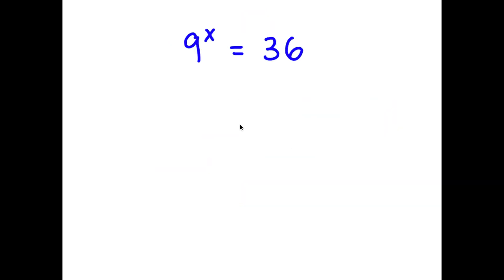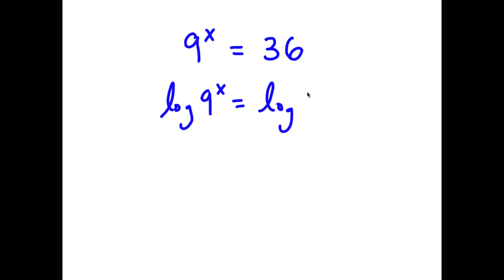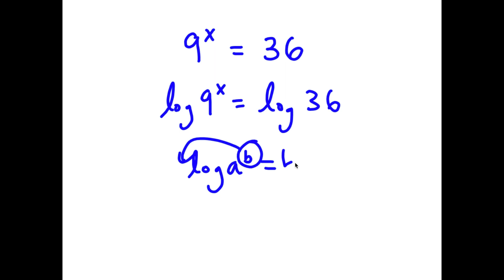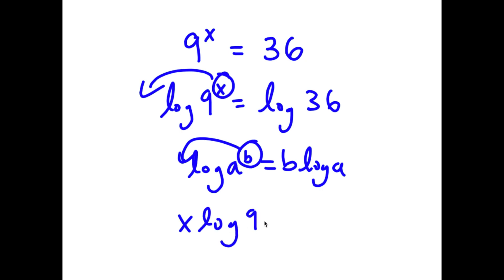In this problem I have 9 to the power of x is equal to 36. So to solve this, I'm going to first start by taking the log on both sides. So now I have log of 9 to the power of x is equal to log of 36. And if I have something in the form log a to the power of b, I can move this exponent b to the front. So now I have b times log a. So for log 9 to the power of x, I move x to the front. So now I have x times log 9 is equal to log 36.